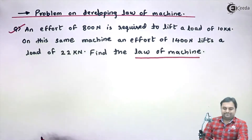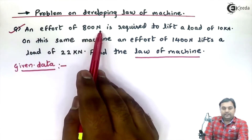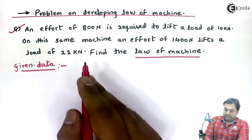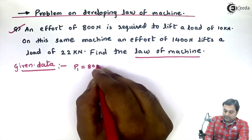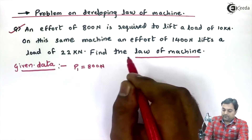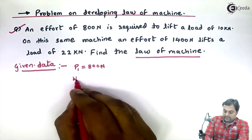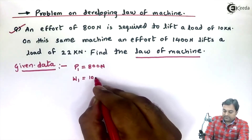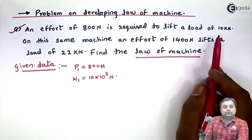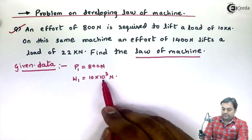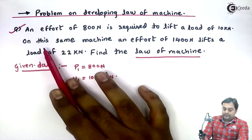I will write the given data. An effort of 800 Newton, so effort P1 is 800 Newton, is required to lift a load of 10 kilonewton, so W1 is 10 kilonewton, which is 10 into 10 raised to 3 Newton, because 1 kilonewton is 1000 Newton. So 10 kilonewton is 10,000 Newton.